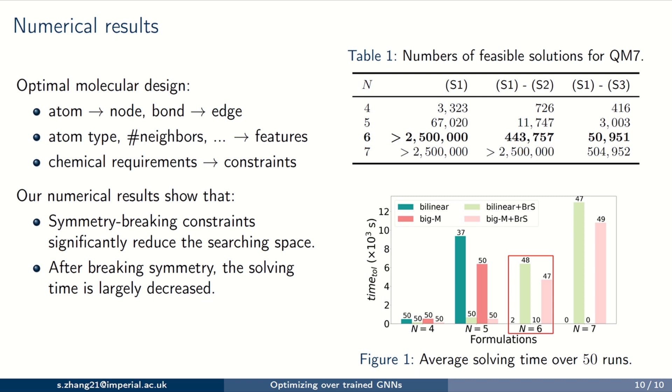which shows the performance of our symmetry breaking constraints. About the solving time, as shown in Figure 1, no more than 10 runs can solve optimality within time limits, so we don't report their average solving time here. After breaking symmetry, however, most runs can successfully solve optimality within time limits.